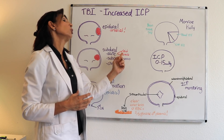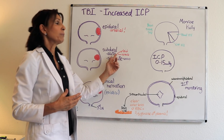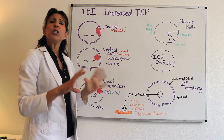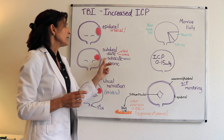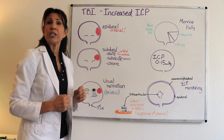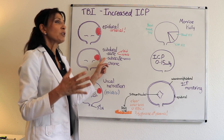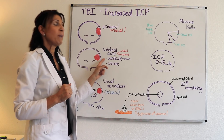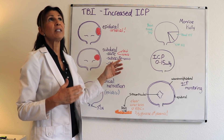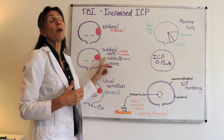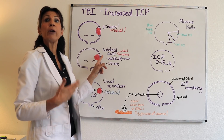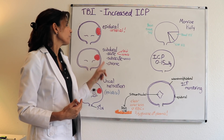A subdural hematoma can be arterial and grow rapidly like an epidural, or it can be venous in origin and still grow rapidly. The subacute subdural may or may not need quick surgical evacuation — that's a case-by-case basis. It is always venous in origin, but it is still an emergency requiring acute care.